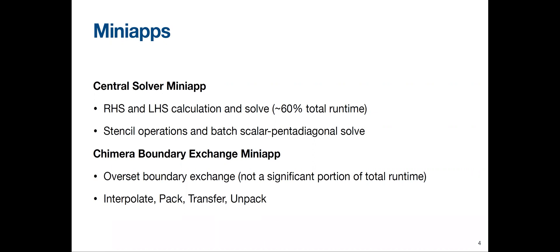The second mini app was the Chimera Boundary Exchange mini app. This covers overset boundary exchanges — not a significant portion of total runtime, but it represents a technical barrier for running real problems: how do we transfer data between different GPUs? This mini app performs interpolation to boundary points, packs up that data, transfers it over MPI, and then unpacks it on the other device.